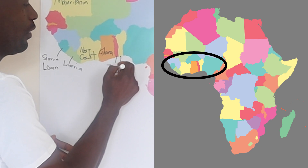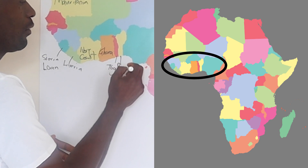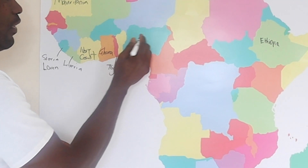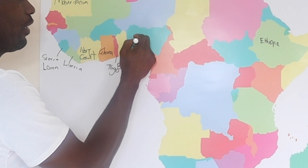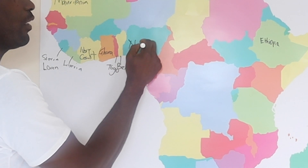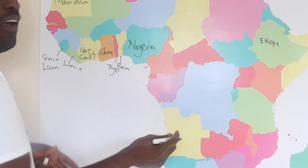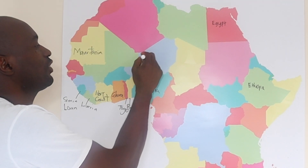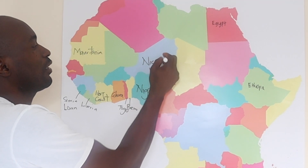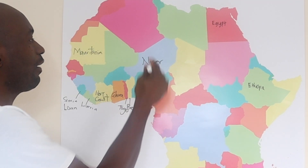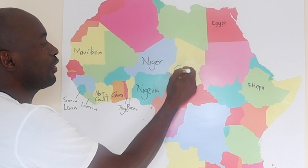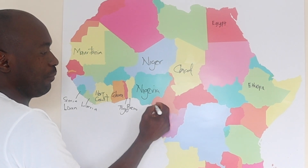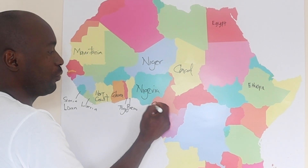I have Benin. And here I have Nigeria — that's my home country. And here I have Niger, which is at the top there. I have Chad here. I have Cameroon.